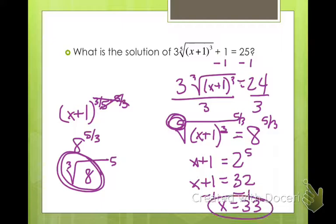You want to go ahead and check the answer. 31 plus 1 is 32 — wait, let me use my calculator. 34 cubed is 39,304; raise that to the 1/5 power and multiply by 3, then subtract 1, and we get 25. That checks out.